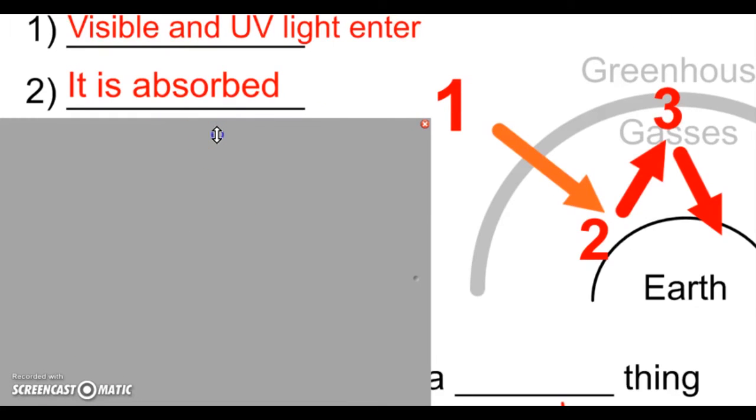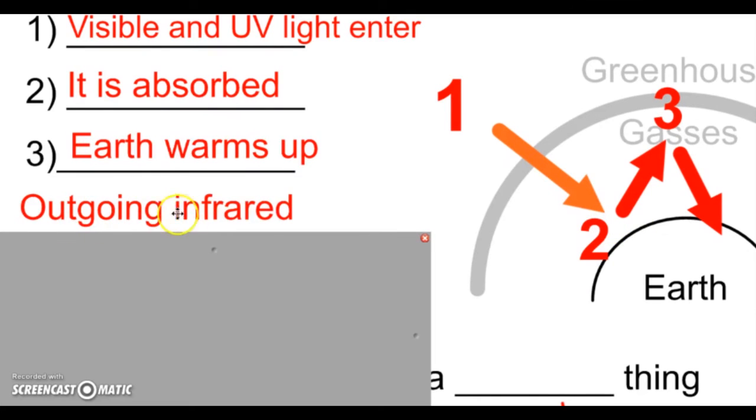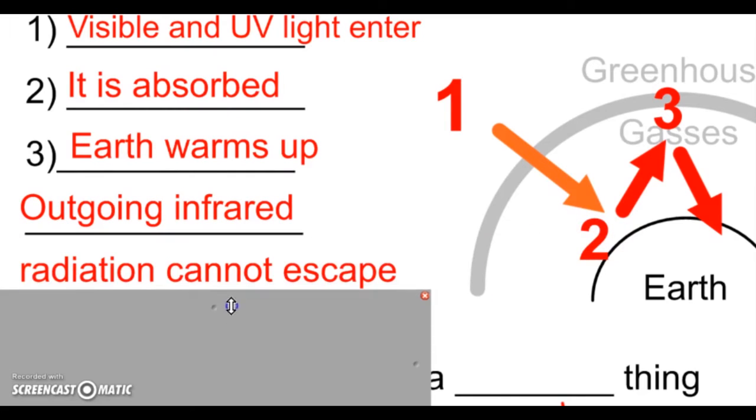It is absorbed and the Earth warms up. And then step three: because the Earth is nice and warm from that sunlight, that outgoing infrared radiation from the warm Earth can't escape. Well, some of it can escape, some of it cannot, but to simplify it we're just going to say it's going to get reflected back down.